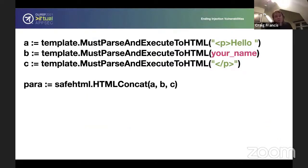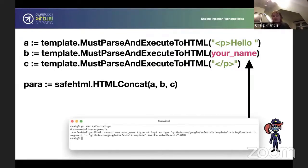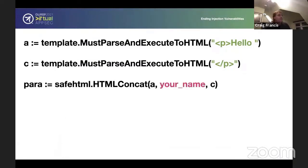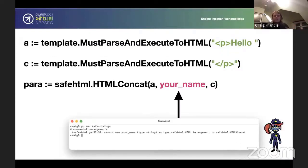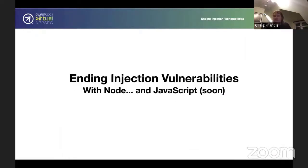If the developer did this wrong, must pass and execute to HTML, your name, this would be rejected. It just wouldn't allow that. Likewise, if during the concatenation phase, you did A, your name, C, that'll also be rejected. So the program will not compile.